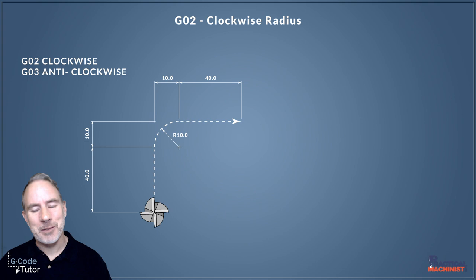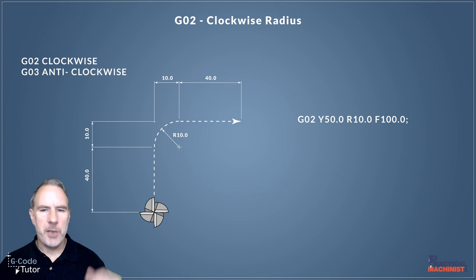Let's have a look at the G02 clockwise radius. If we're going to cut this radius here, we're moving 40 millimeters to the beginning of the radius. Then we have our 10mm radius, and then we'll be moving 40 millimeters from that center point to the radius away. Let's have a look at a short program on how we're going to do this. Remember, there is a big chunk of program before these lines. This is not the complete program, just a snippet.